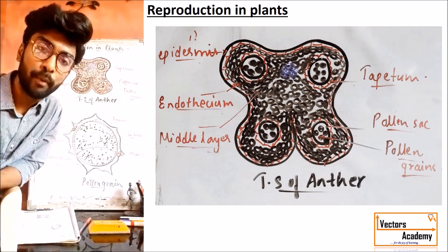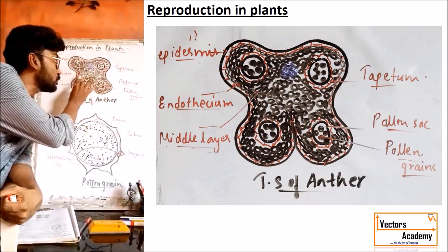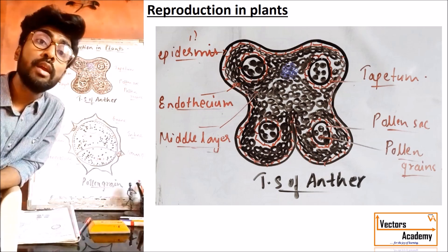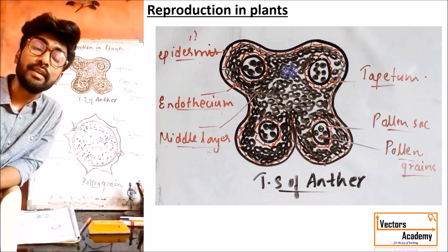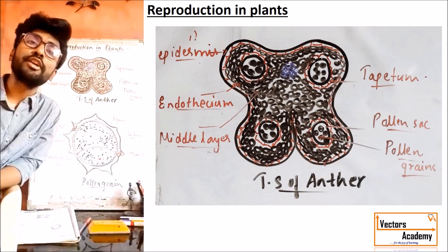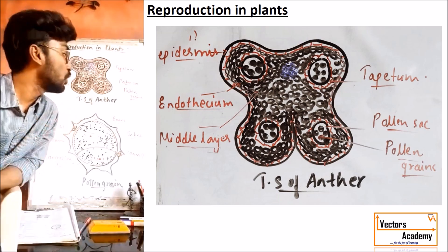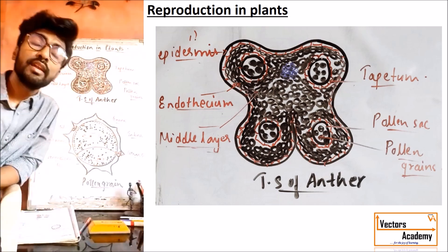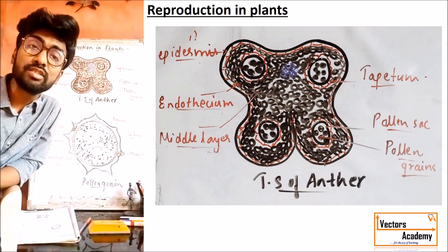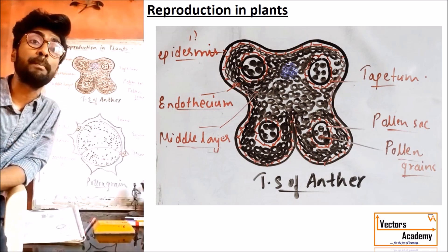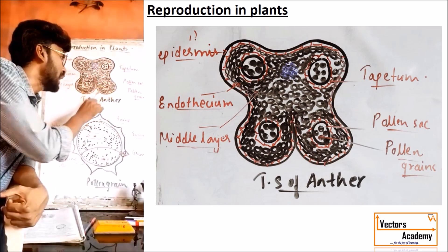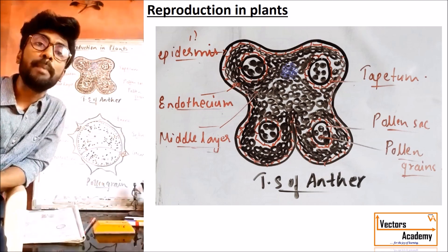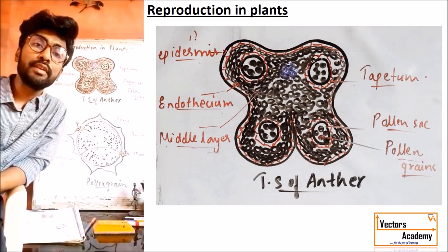The third layer is called the middle layer. Inner to the endothecium, two to three layers of parenchymatous cells are present, called the middle layer. The middle layer plays an important role in that after the maturity of the anther, it generally gets degenerated. The innermost layer of the anther is called tapetum. The tapetum is a layer which generally provides nourishment or nutrients to the pollen grain.